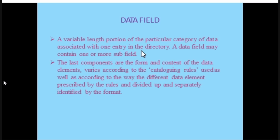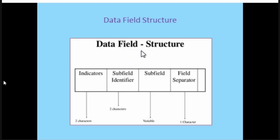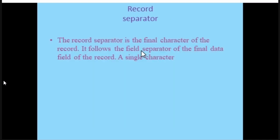The data field is a variable length portion of data in a particular category associated with one entry in the directory. The last component defines the forms and content of the data elements according to the cataloging rules. The data field has indicators, a subfield identifier, the subfield itself, and a field separator. The record separator is the final character of the record — it follows a field separator on the final data field of the record, and it is a single character.